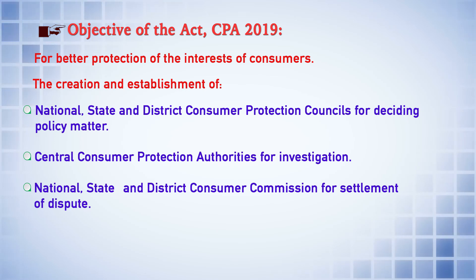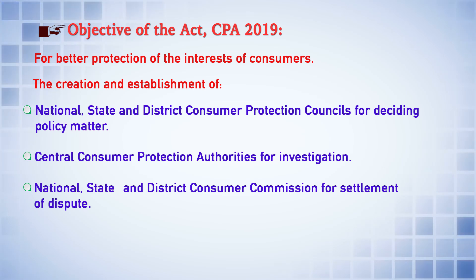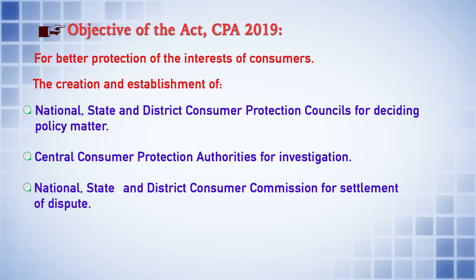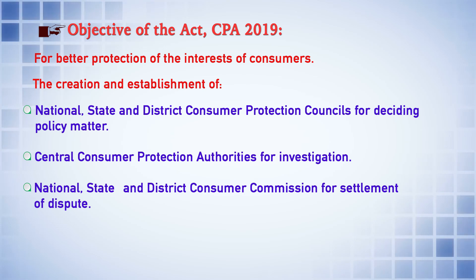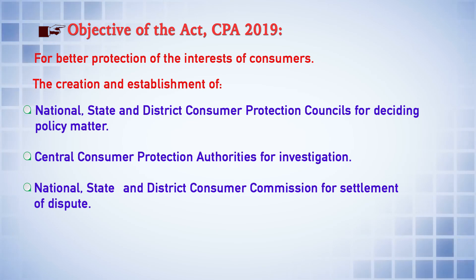The third institutional mechanism provided under the law is the establishment of national, state, and district-level consumer commissions for the purpose of settlement of disputes. Again, a three-tier structure: the National Consumer Disputes Redressal Commission at the national level, the State Consumer Disputes Redressal Commission at the state level, and the District Consumer Commission at the district level. So one is for policy matters (councils), second for investigation (the Central Authority), and the third for settlement of disputes (commissions).